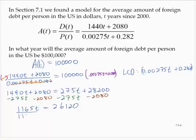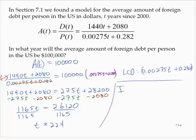Dividing through by 1,165, t is approximately 22.4. All right. So if t is approximately 22, that's the number of years since 2000, so in 2022,